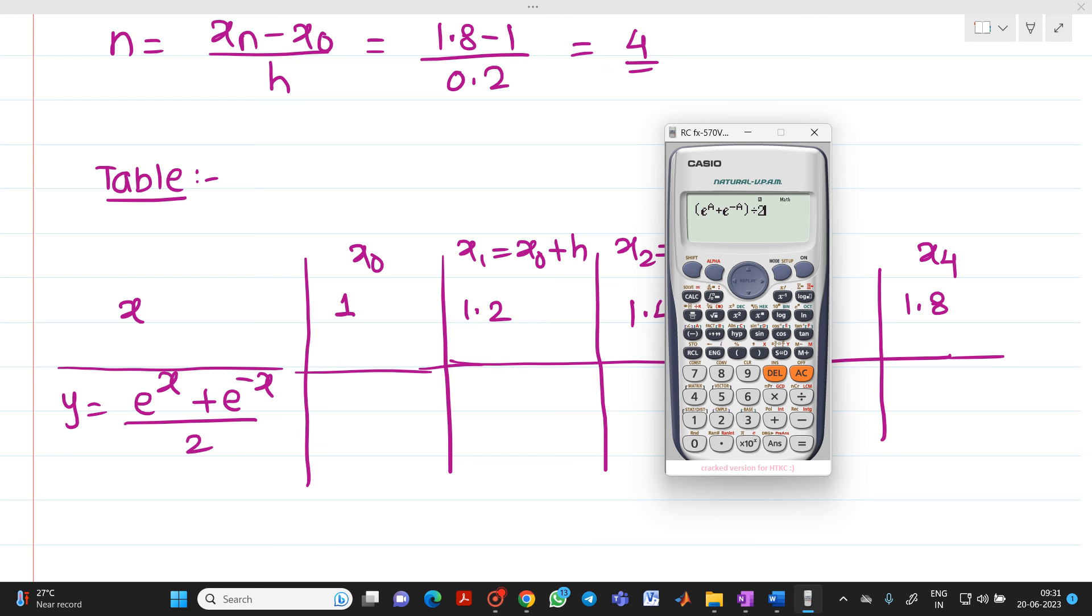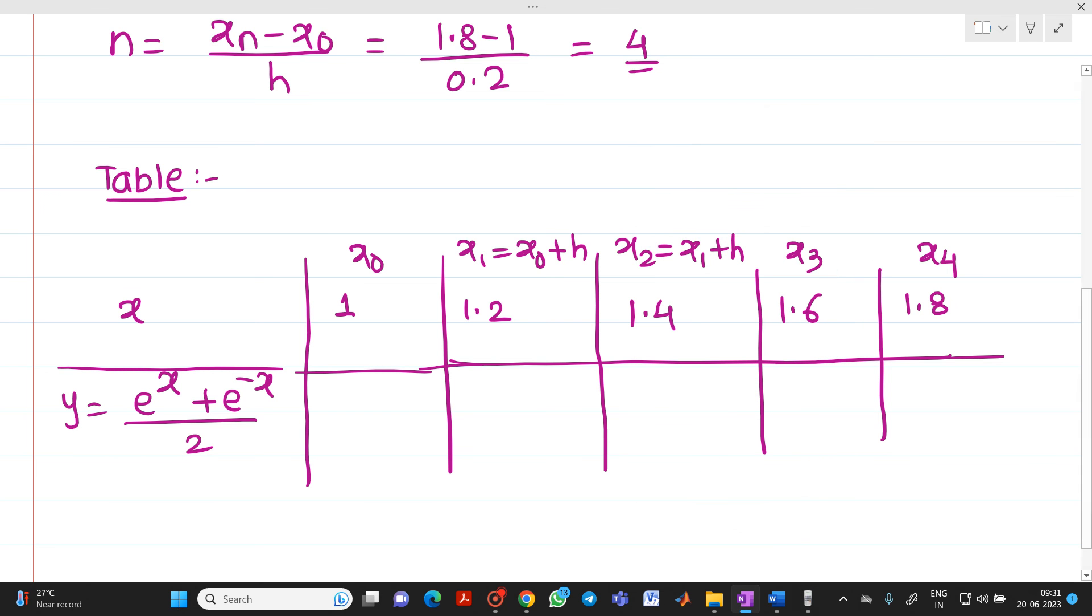So, let me substitute, press calc. Let me substitute 1, you will get answer as 1.5430. When I put 1.2, then you will get answer as 1.8106. When you put 1.4, you will get answer as 2.1508. So, like that, I will complete this table.